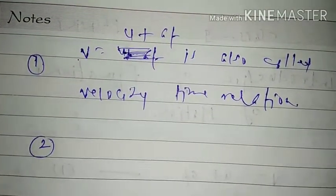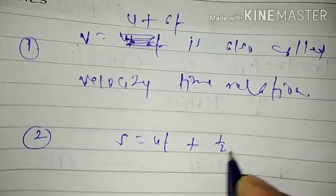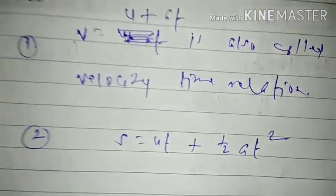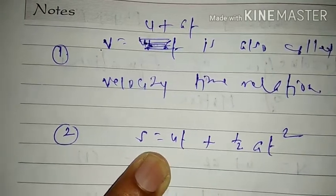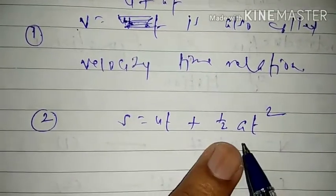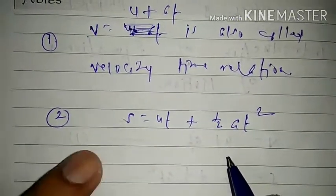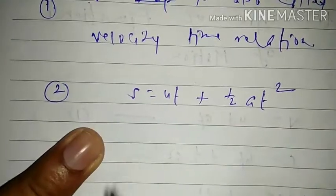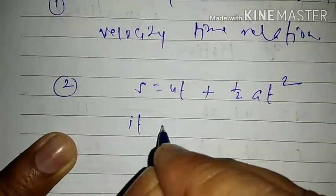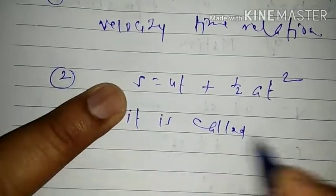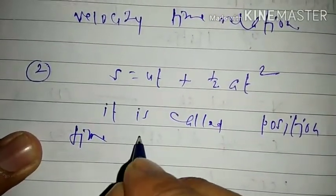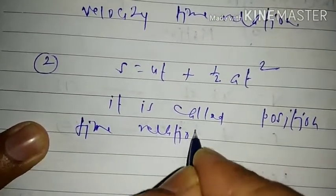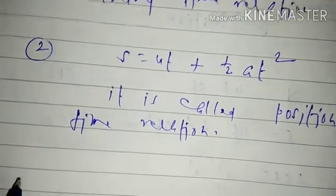The second equation, S = UT + ½AT², is called the position-time relation. It tells us that if any object starts to travel with initial velocity U and in time T its acceleration is A, then the distance travelled will be S — showing how position changes with time.